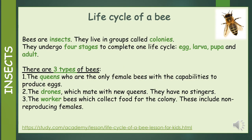The life cycle of a bee. Bees are insects. They live in groups called colonies. They undergo four stages to complete one life cycle. These stages are egg, larvae, pupa and adult.